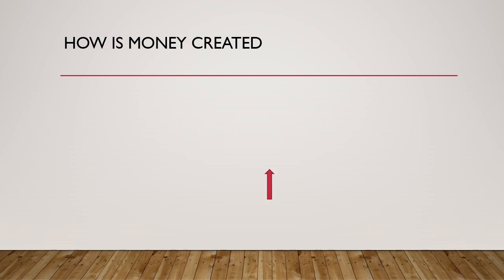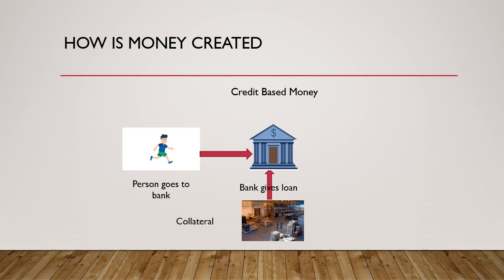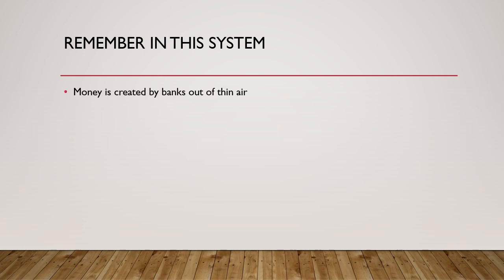How does it work, and how is money created in this system? A person goes to the bank to get a loan. The bank takes collateral from the person — which can be inventory or assets — and in exchange gives credit or a loan. Voilà, money is created. The credit or loan is the money, hence the name credit-based monetary system. Importantly, there is no backing by any commodity; money is created by banks out of thin air.